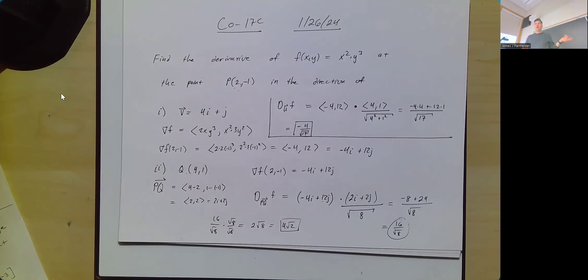Really, there's not a lot else to say about directional derivatives. You find the gradient, dot it with the direction vector written as a unit vector by dividing by the magnitude.